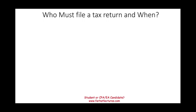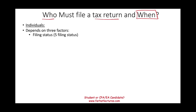Welcome to this session in which we will discuss who must file a tax return and when. Starting with individuals, when it comes to individuals, it depends on three factors that determine when you should file. The first one is your filing status — is it single, married filing jointly, married filing separately, head of household, or surviving spouse? That matters because based on your filing status, it's going to determine something called your standard deduction.